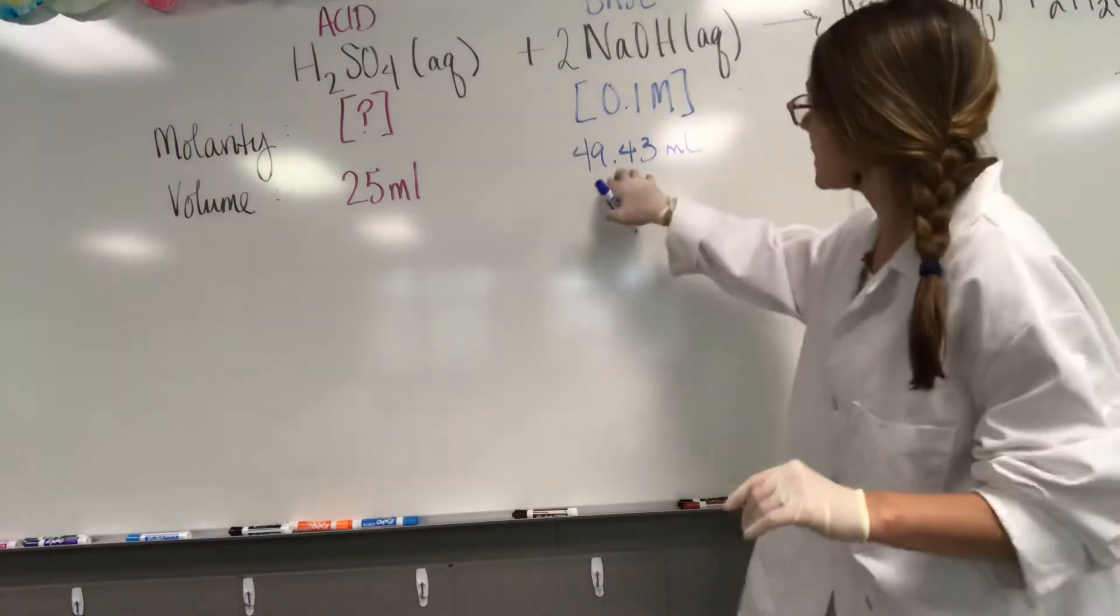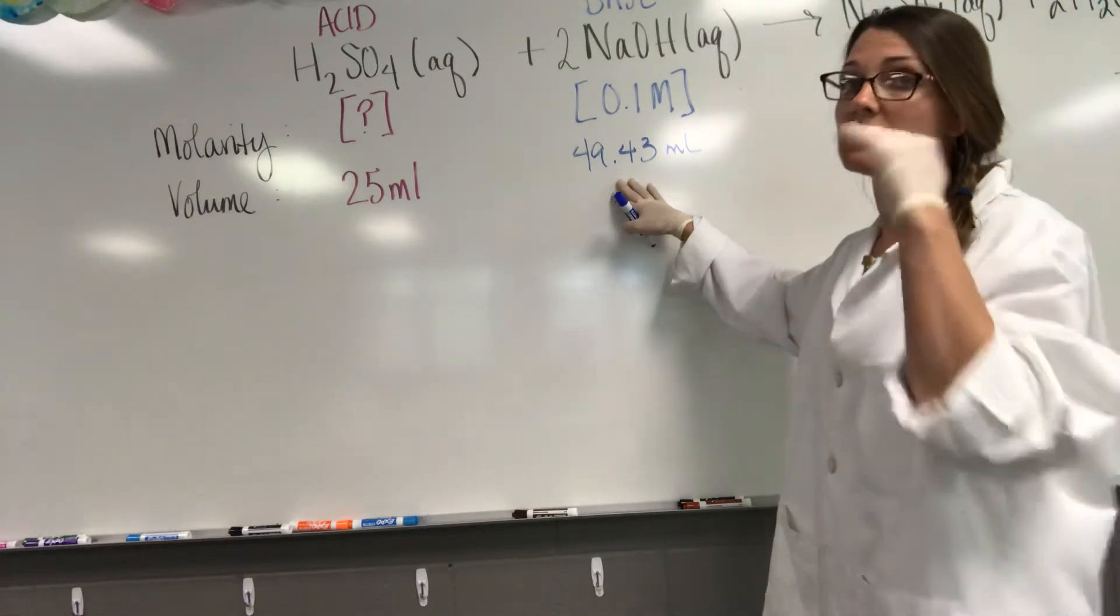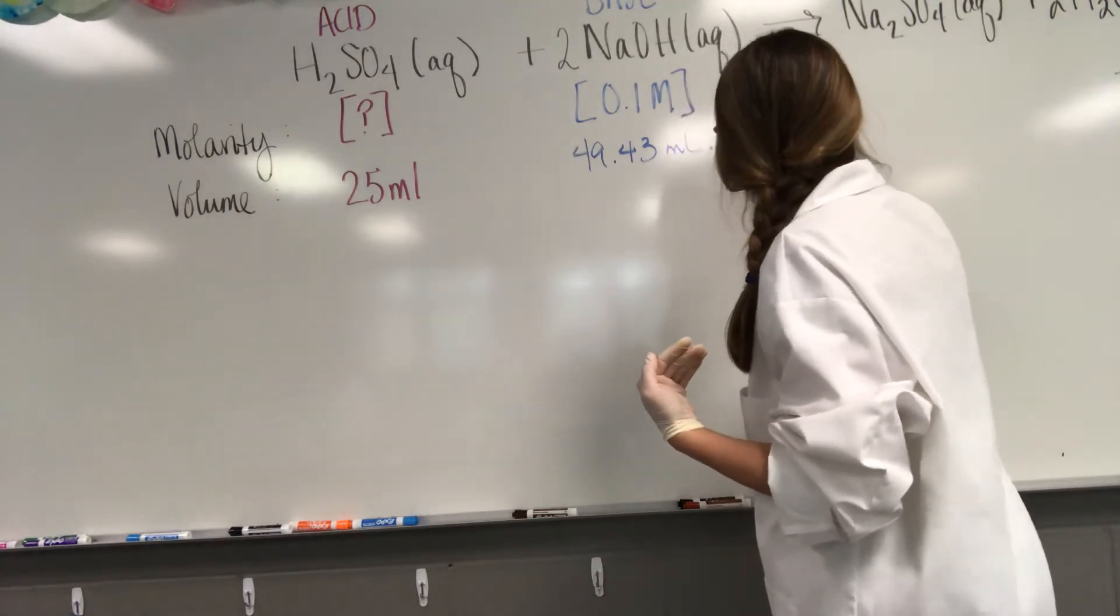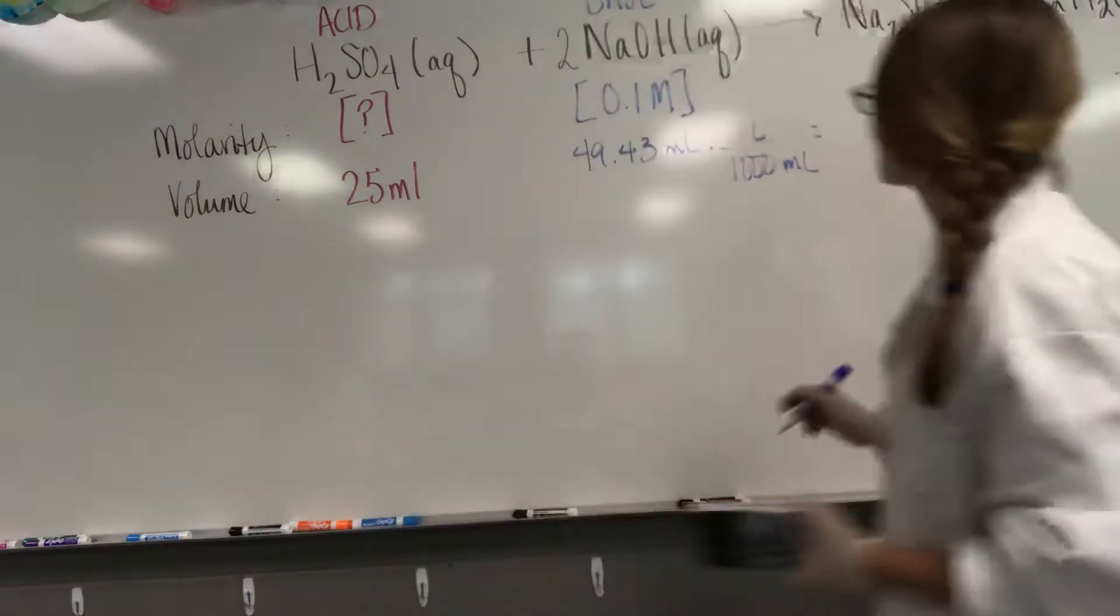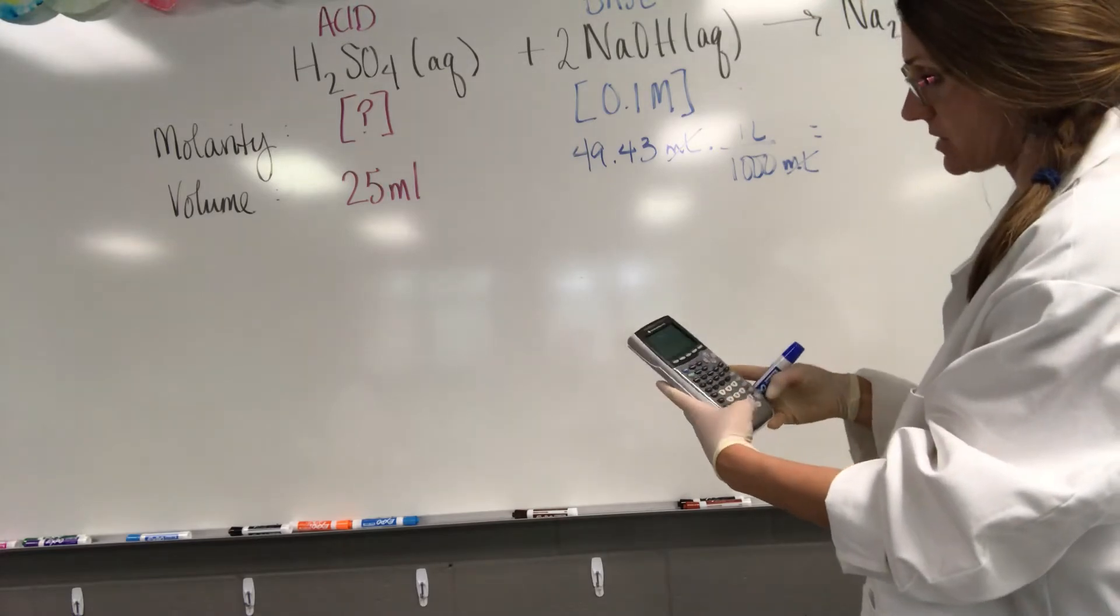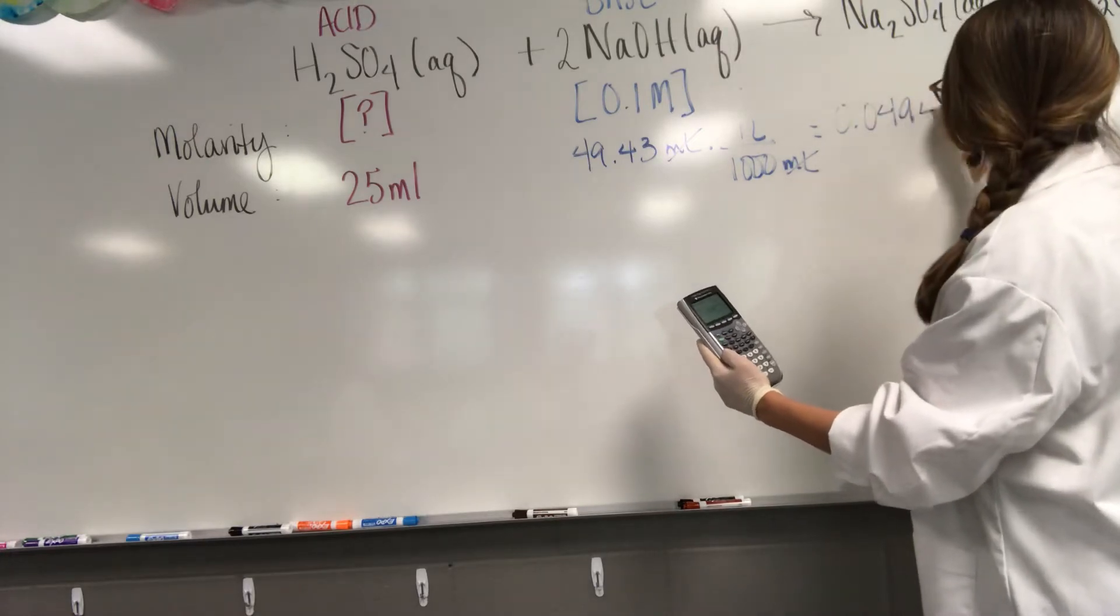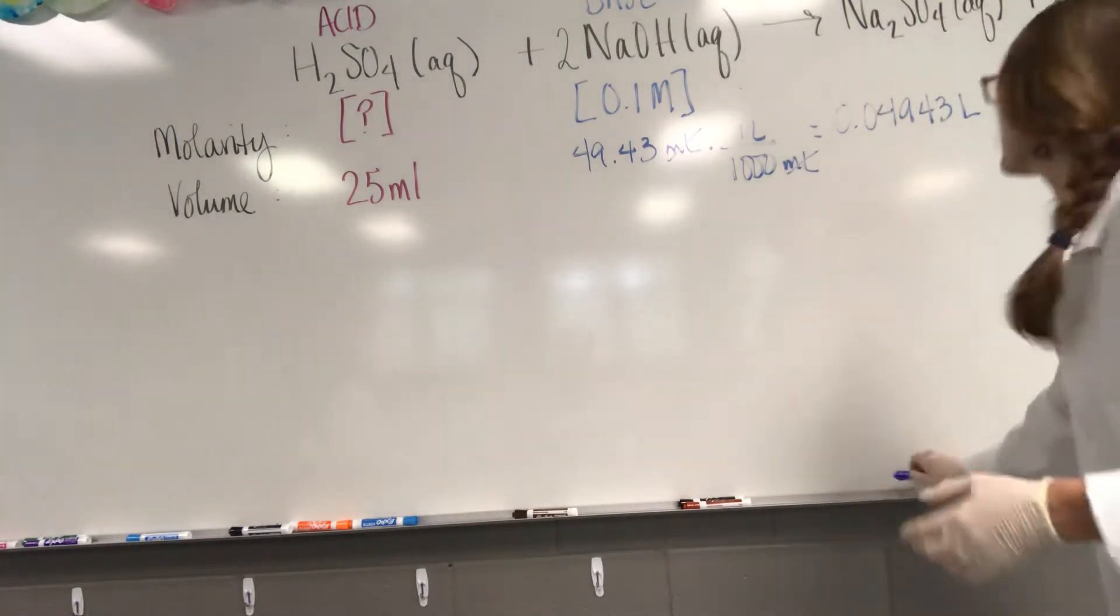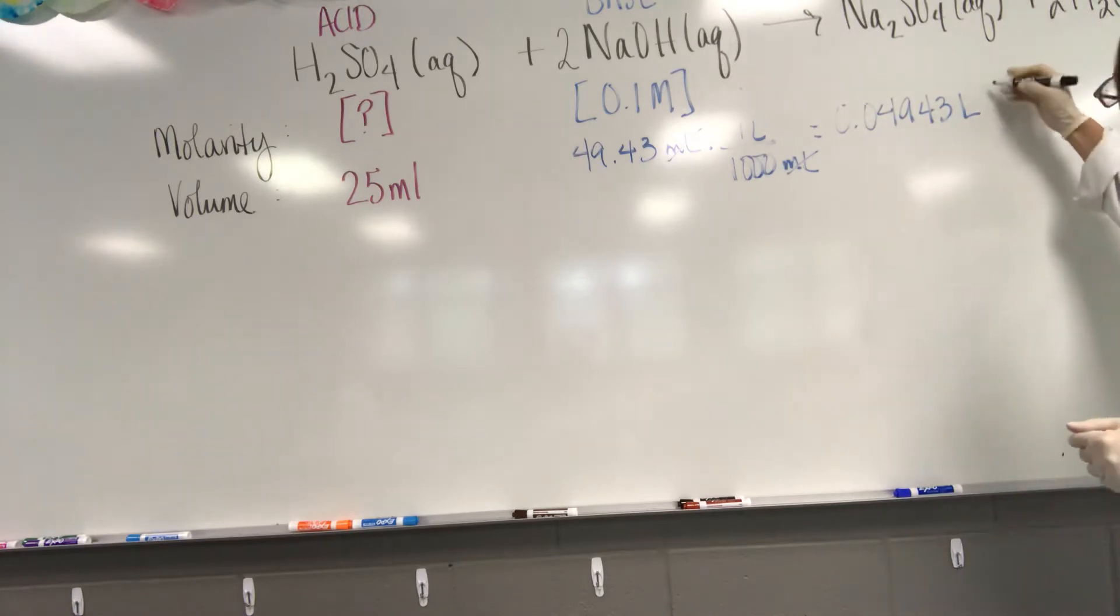So here's what we're going to do. The very first step we're going to do is we're going to just go ahead and convert milliliters to liters. The reason that we're going to do that is we're going to be working with molarity, which remember is mole over liter. So we're going to start out by just going ahead and multiplying this by a conversion factor and converting to liters. So 49.43 divided by a thousand, and that's 0.04943 liters. I'm going to change pens because it seems like that blue is a little bit hard to see. All right, so I've got 0.04943 liters of sodium hydroxide solution.